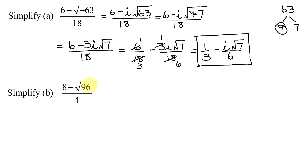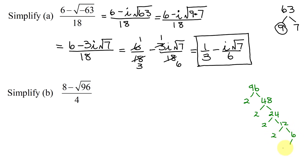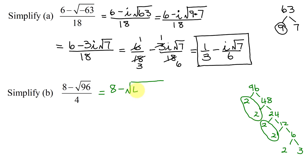So the first thing I'm going to have to do is simplify the square root of 96. I need to factor 96, and I'm going to do this by prime factorization. 2 divides into 96 forty-eight times; 2 divides into 48 twenty-four times; 2 divides into 24 twelve times; 2 divides into 12 six times; and 6 is 2 times 3. So I group these two 2's together and these two 2's together, leaving 2 times 3. My expression becomes 8 minus the square root of 4 times 4 times 6, all divided by 4.